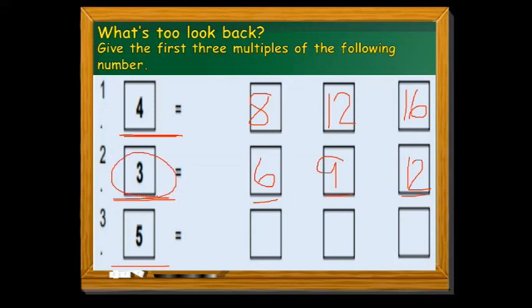And then we have number 5. Let's add it by itself: 5 plus 5, we have 10; plus 5, we have 15; and plus 5, we have 20. So 10, 15, and 20 are the first 3 multiples of 5.